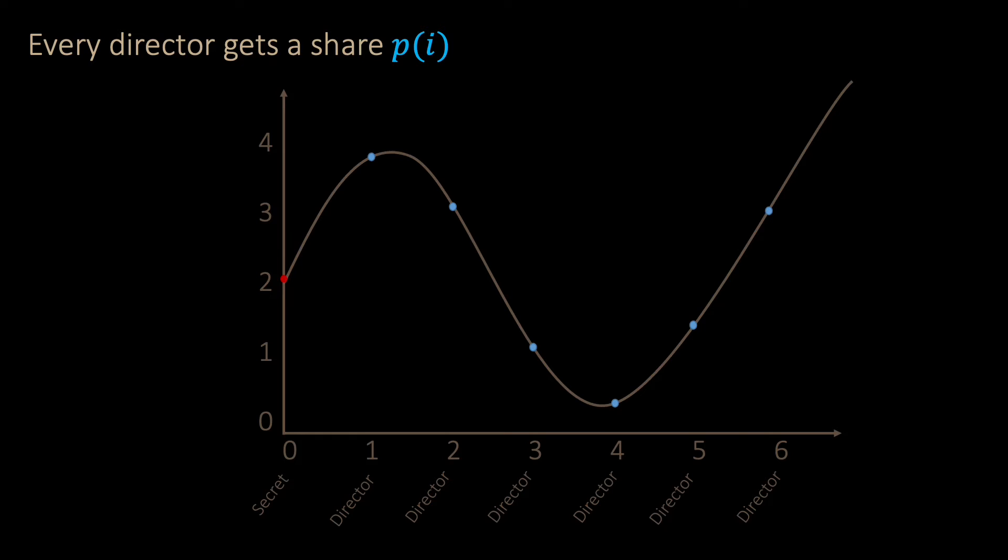To share the secret, first, every director has a public number, such as 1, 2, 3, and so on. Each director gets a share, P of I. In this example, we have 6 directors.